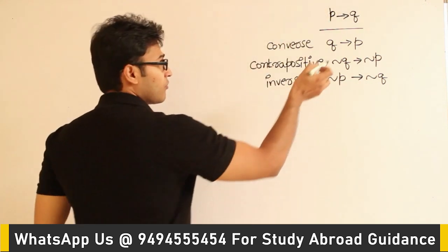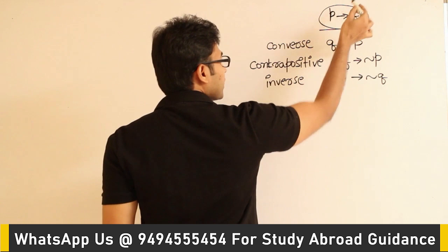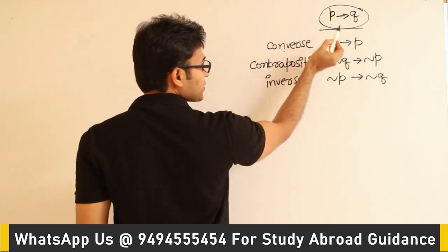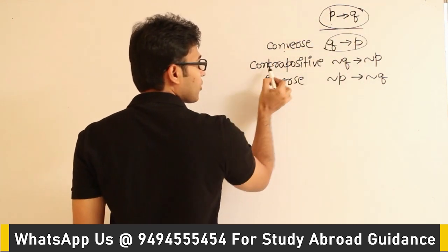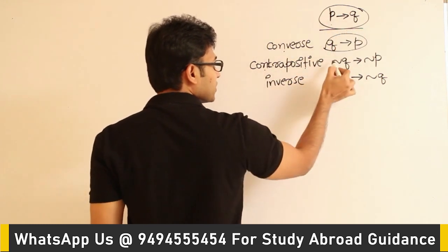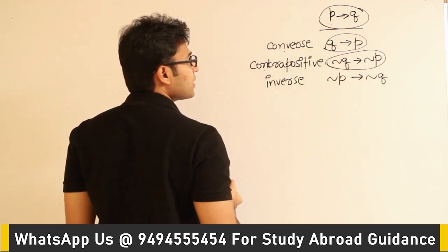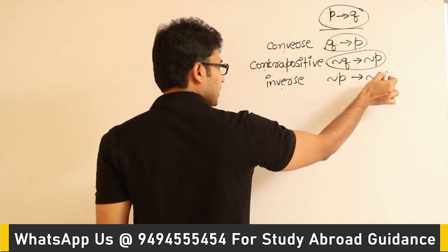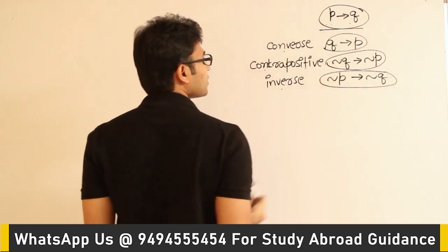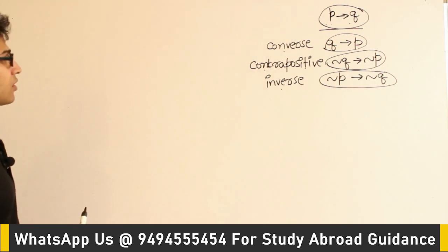Remember that we are talking about P implies Q. Converse of P implies Q is Q implies P. Contrapositive of P implies Q is negation Q implies negation P. And inverse of P implies Q is negation P implies negation Q. So: converse, contrapositive, and inverse.